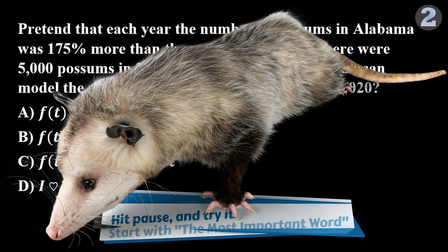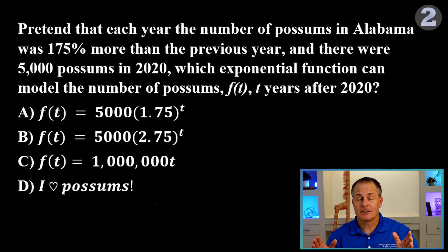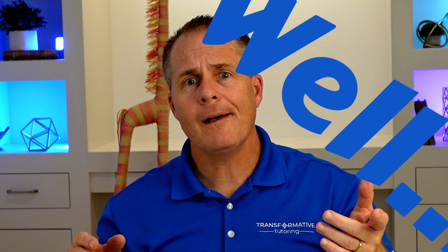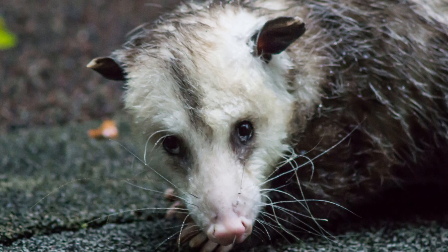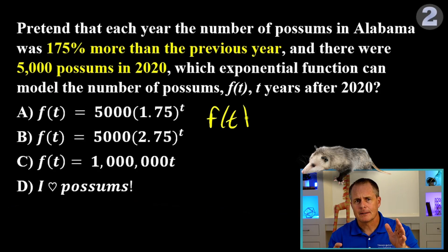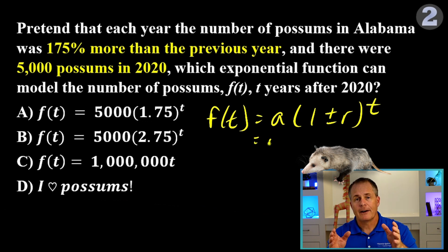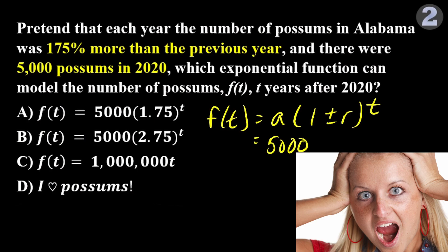Now, tap pause to try problem 2 on your own. This problem is very much like the last problem. So, we'll use the same formula. What could possibly go wrong next? Well, I see students mess this problem up year after year. We're starting off with 5,000 possums, so that's going to be the multiplier out in front. The starting amount is the y-intercept, and it is always the multiplier in front of an exponential function. So, it has to be answer A or B.